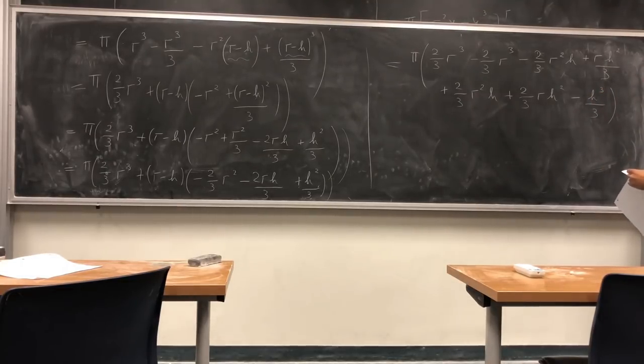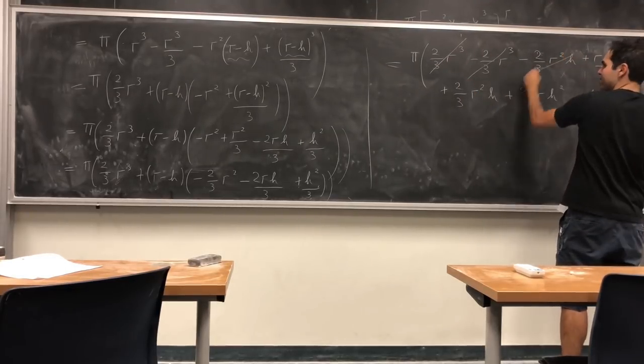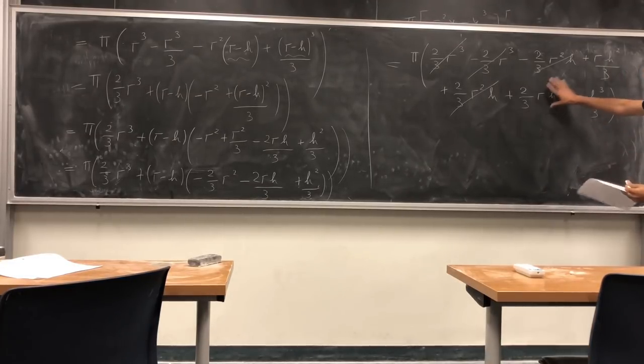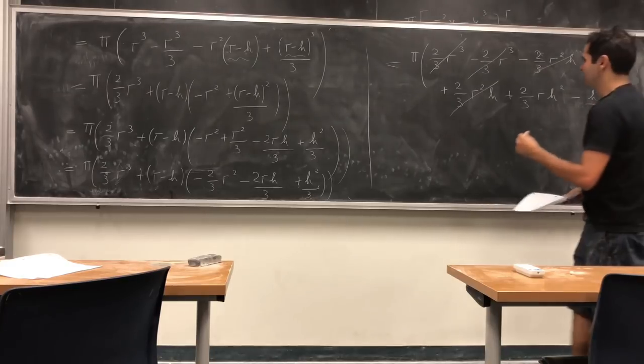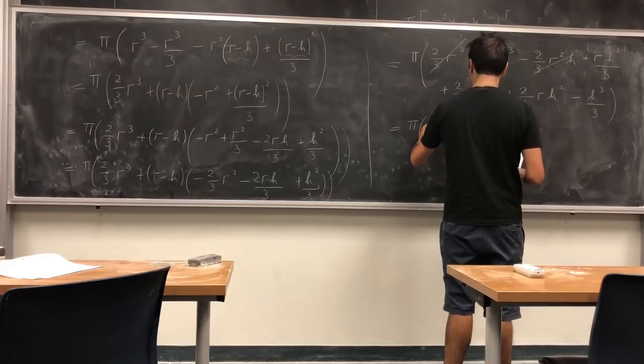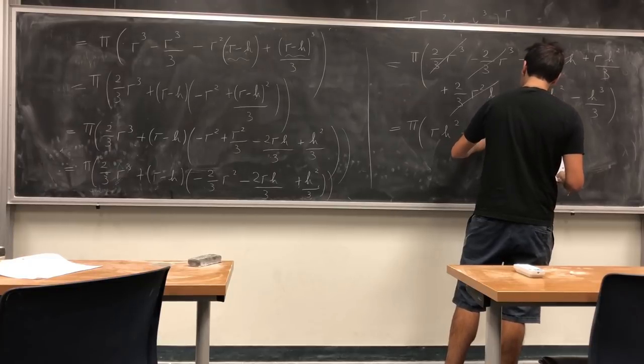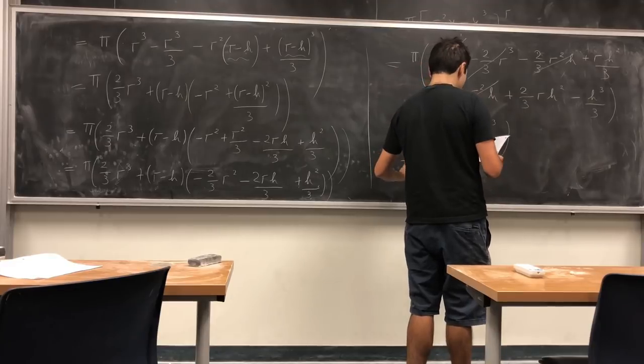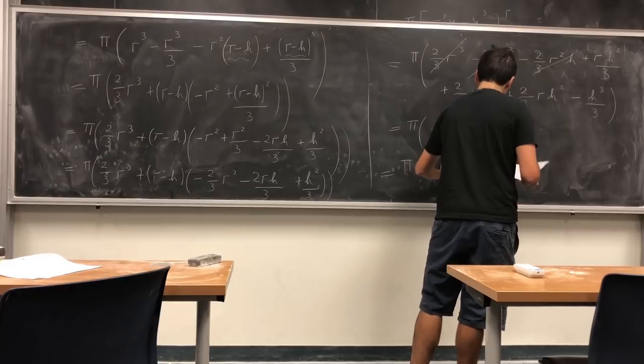And let's see if we have some simplifications. In fact, we do. Bang, bang, bang, bang, bang. We have 1/3 + 2/3 is 1. So we get π(rh² - h³/3). And lastly, we can factor out h². So π h²(r - h/3). Ta-da!